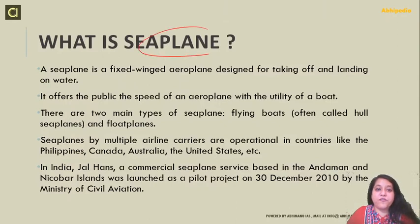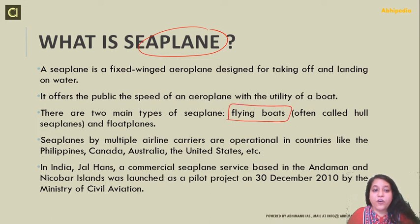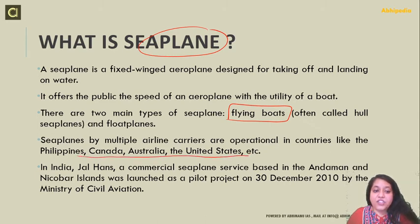A seaplane is a fixed-winged aeroplane designed for taking off and landing on water. It offers the public the speed of an aeroplane with the utility of a boat. There are two main types of seaplane: flying boats, often called hull seaplanes, and float planes. Seaplanes operated by multiple airline carriers are operational in countries like Philippines, Canada, Australia, and the United States. In India, Jal Hans, a commercial seaplane service based in Andaman and Nicobar, was launched as a pilot project on 30 December 2010 by the Ministry of Civil Aviation.